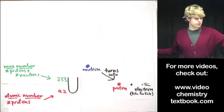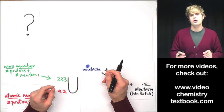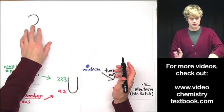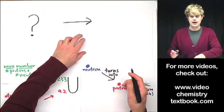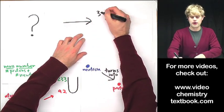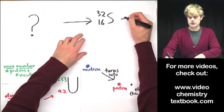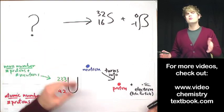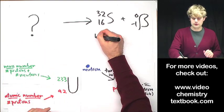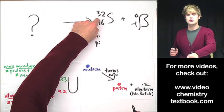Now let's look at another problem that's a little bit different. What's different about this problem is we won't know what we're starting with, and we have to figure it out based on what we get. So we have some sort of mystery element that undergoes beta decay. And then what we end up with is an atom of sulfur-32, as well as a beta particle. So what did we start with?